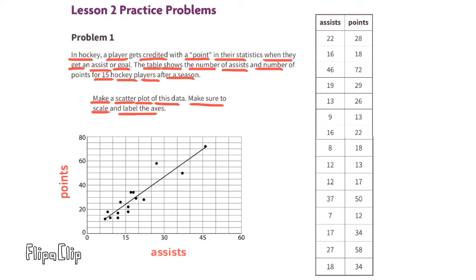I'll quickly match each set of data with its matching point: 22 assists, 28 points; 16 assists, 18 points; 46 and 72; 19 and 29; 13 and 26; 9 and 13; 16 and 22; 8 and 18; 12 and 13; 12 and 17; 37 and 50; 37 and 12; 17 and 34; 27 and 58; 18 and 34.